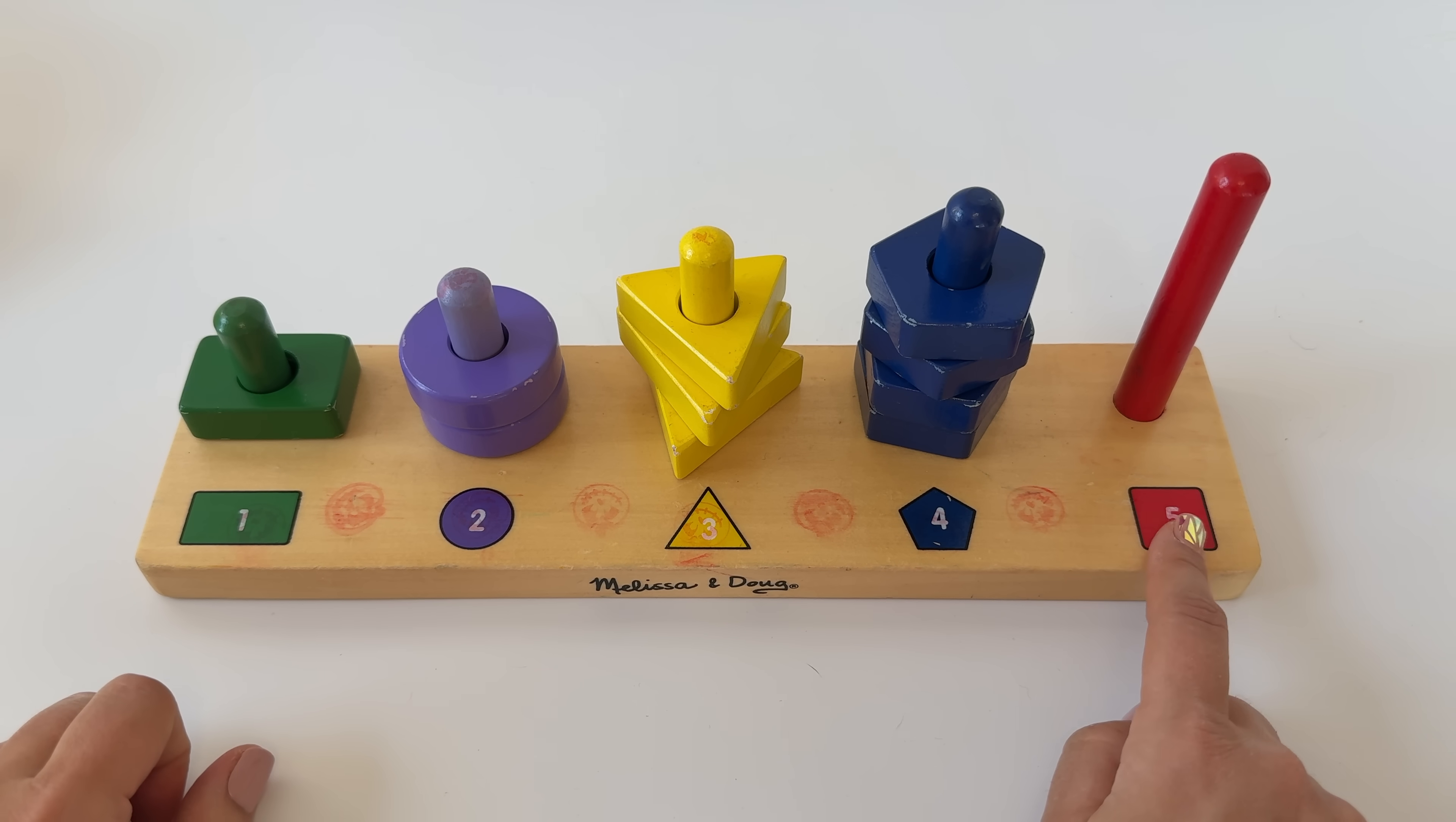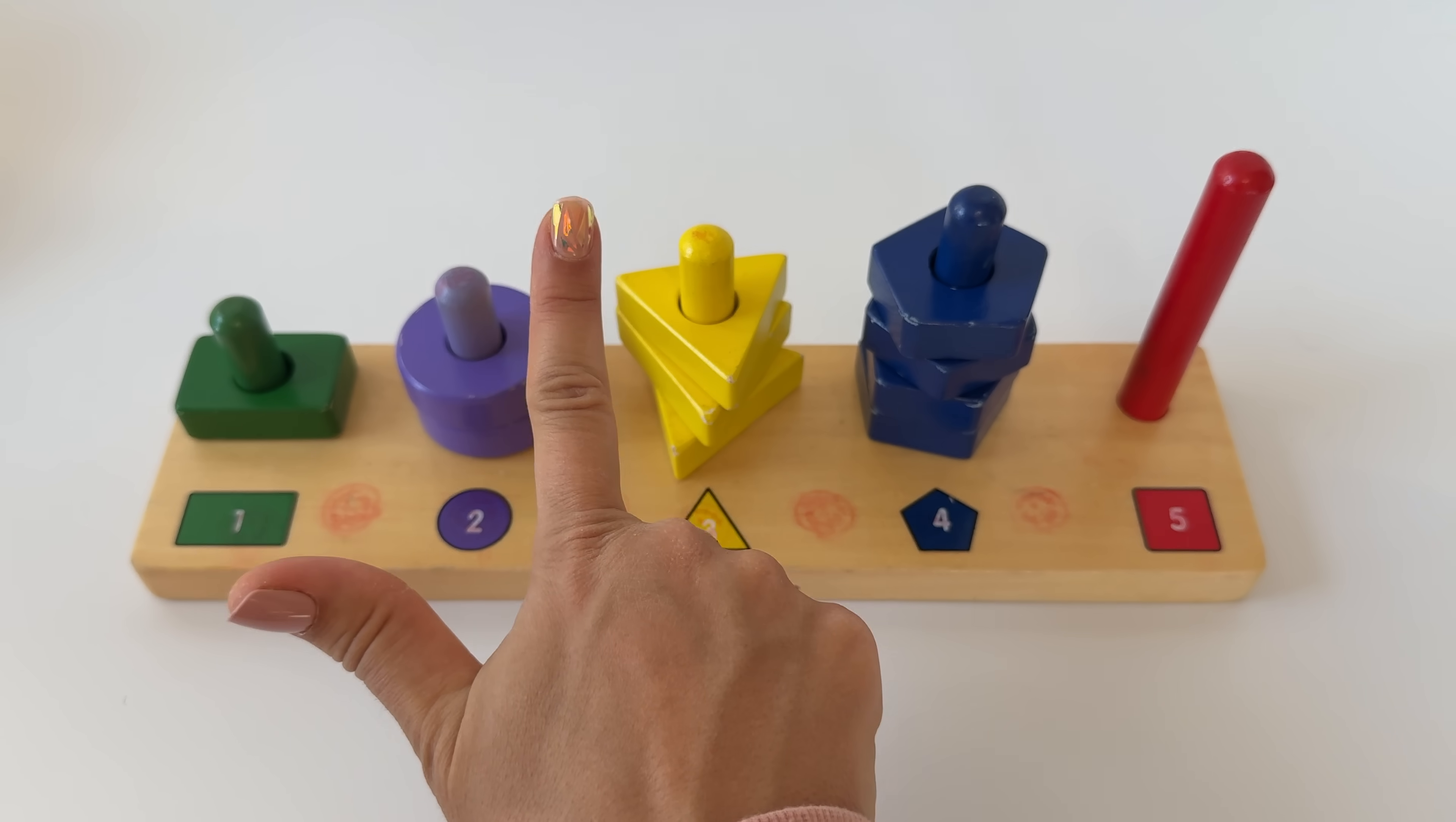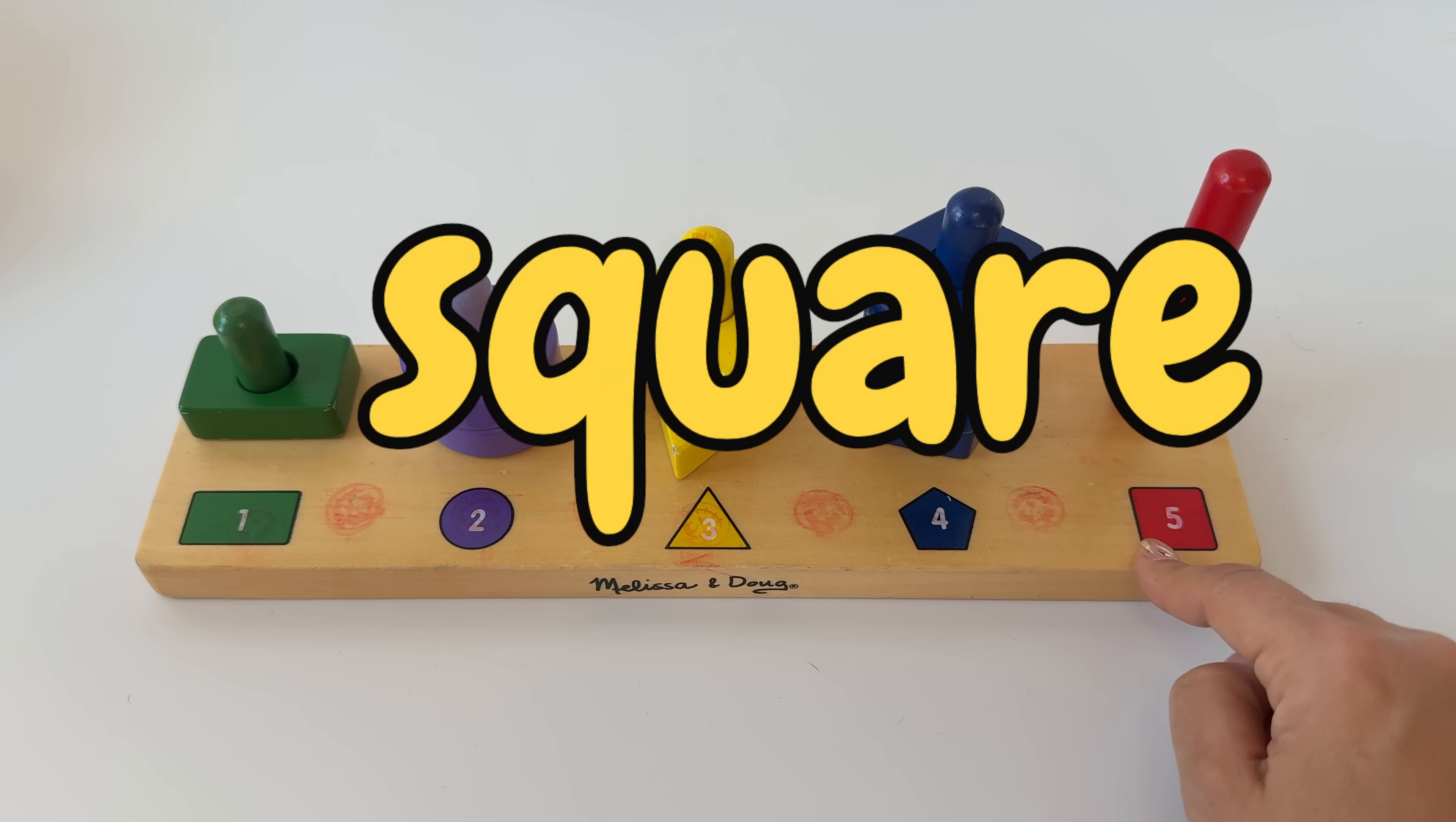Last number. Let's start here and count all the way there. Count with me. One, two, three, four, five. Let's count to five with our fingers. One, two, three, four, five. High five. And what color is the five? It's red. The shape is a square. Say square.